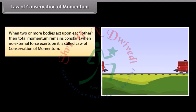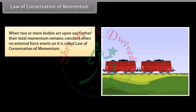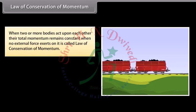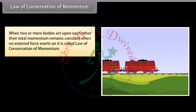When two or more bodies act upon each other, their total momentum remains constant when no external force exerts on it. This is called law of conservation of momentum.